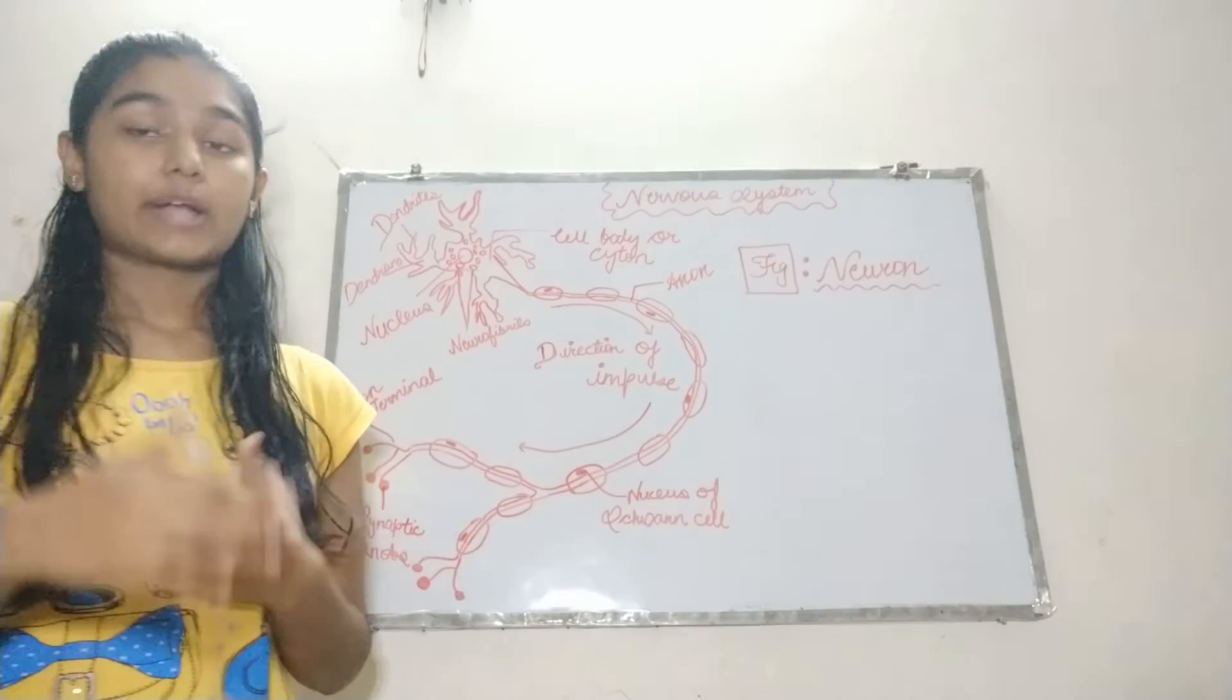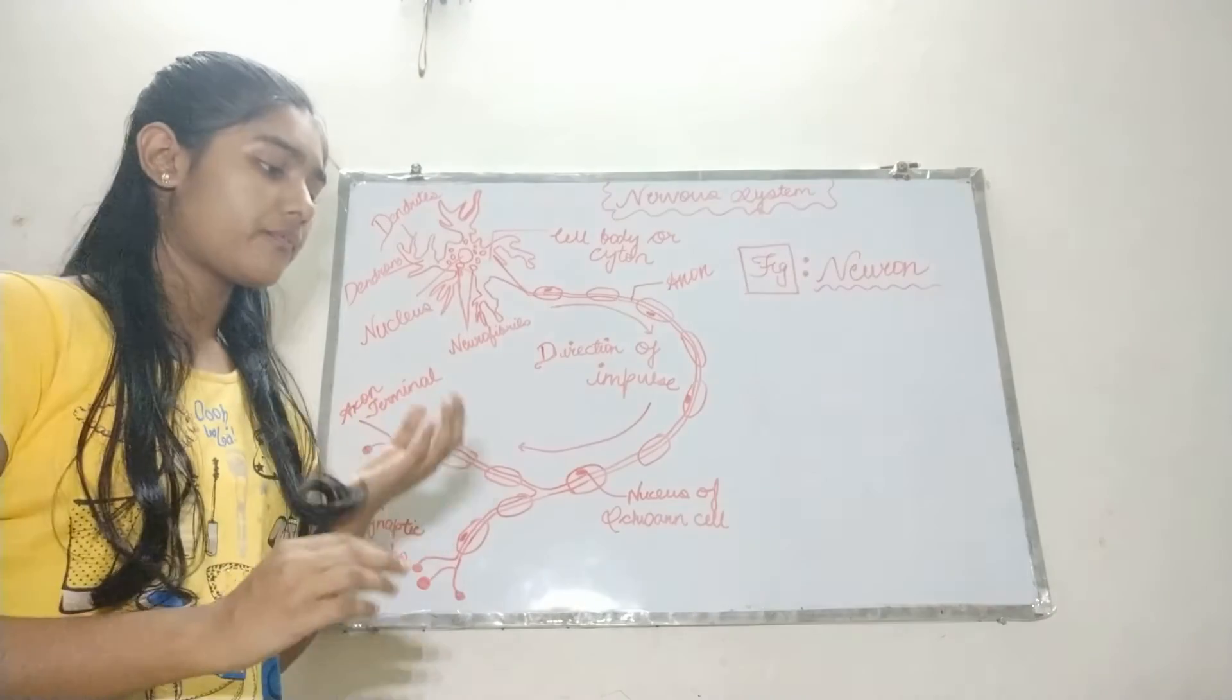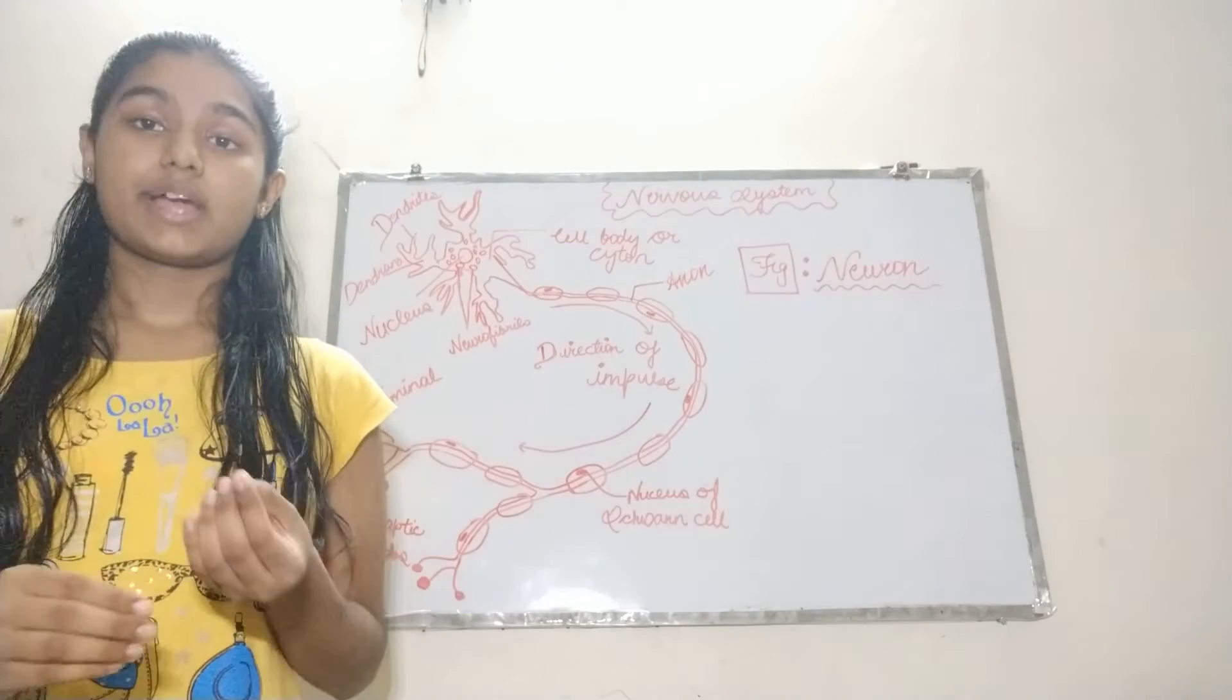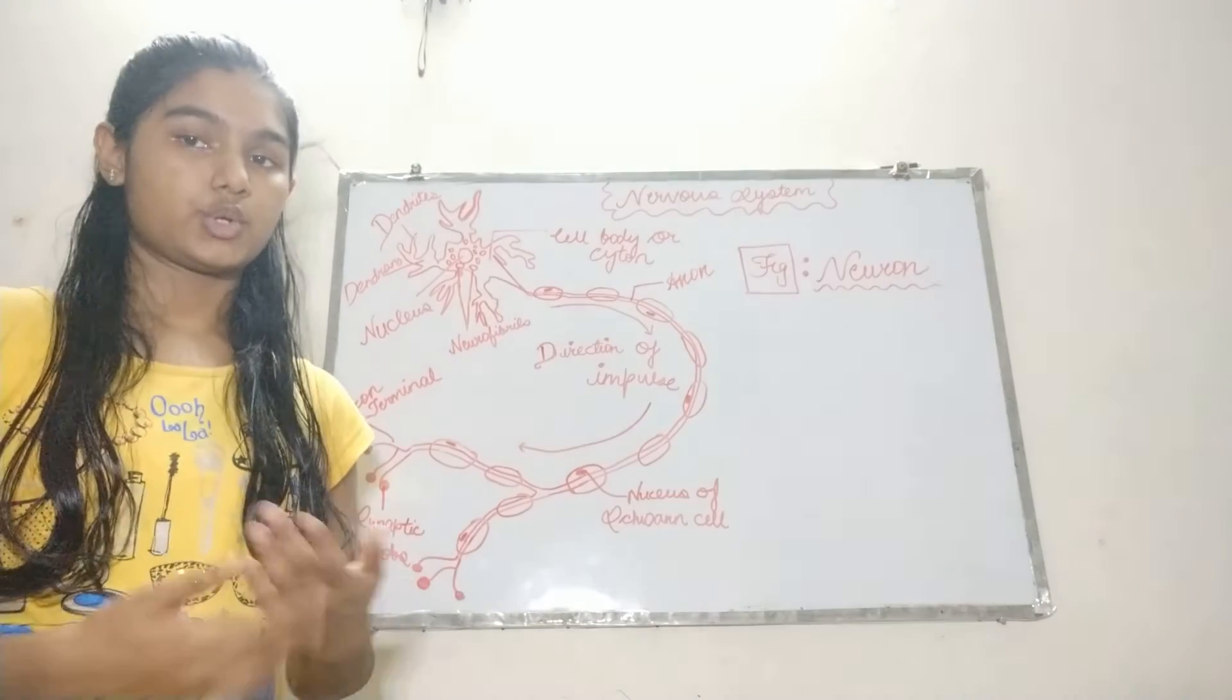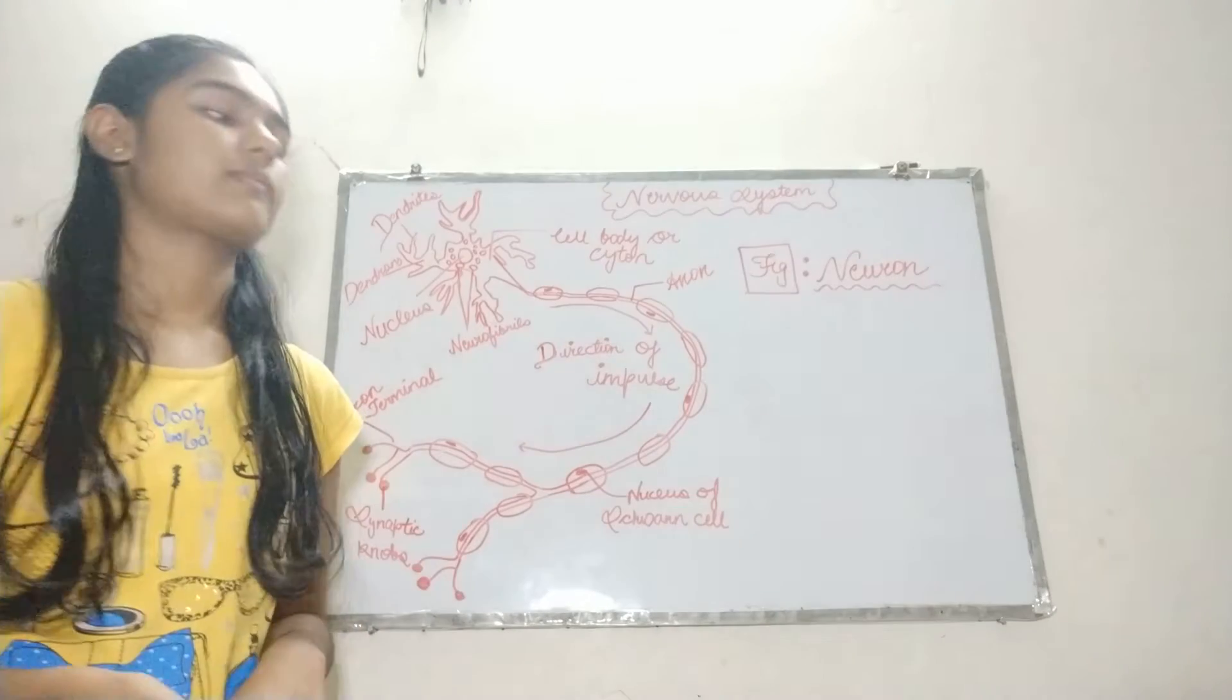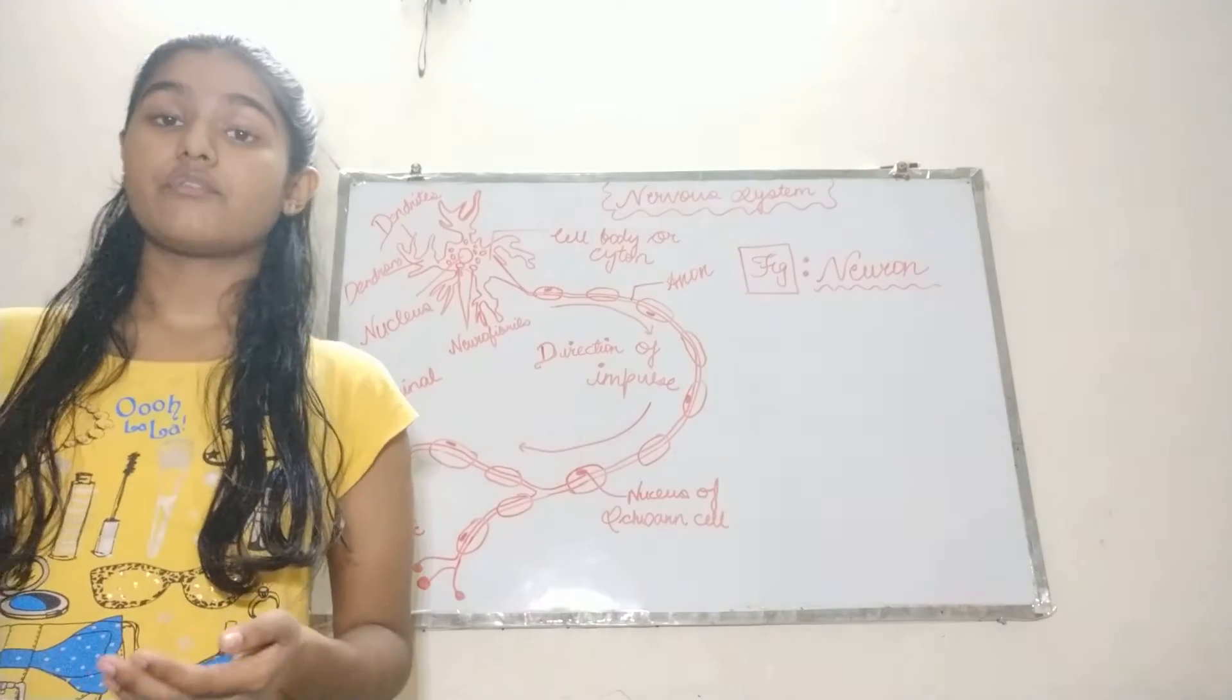Coming back to the topic, we were discussing the nervous system. The first word which comes in our mind about nervous system is neurons. Let's discuss what are neurons. What is a neuron?